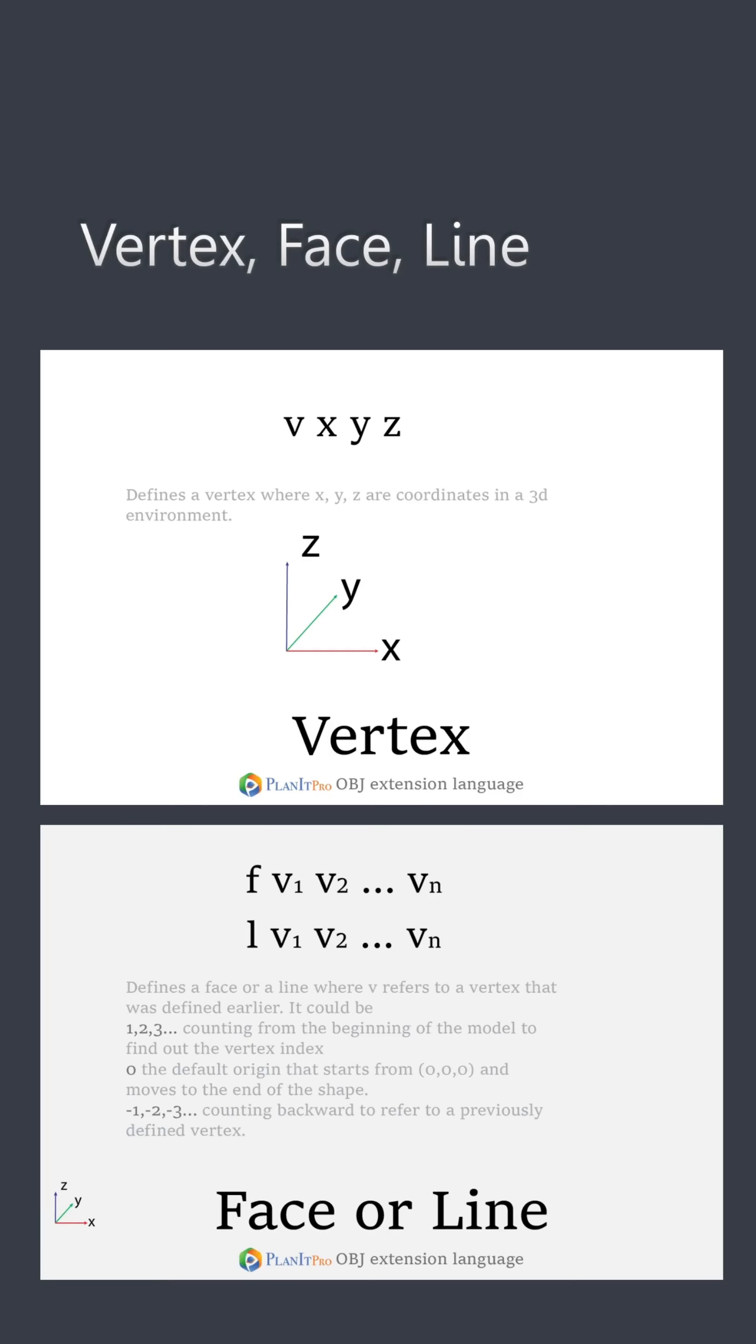Then we have vertex, face, and line. You can define a vertex using its x, y, and z coordinates, then you just need to remember the order of the vertices. Because when you define a face or a line, you need to refer to those vertices using the order, with the first defined vertex having an order of 1. So you'd refer to it as 1, and so forth.